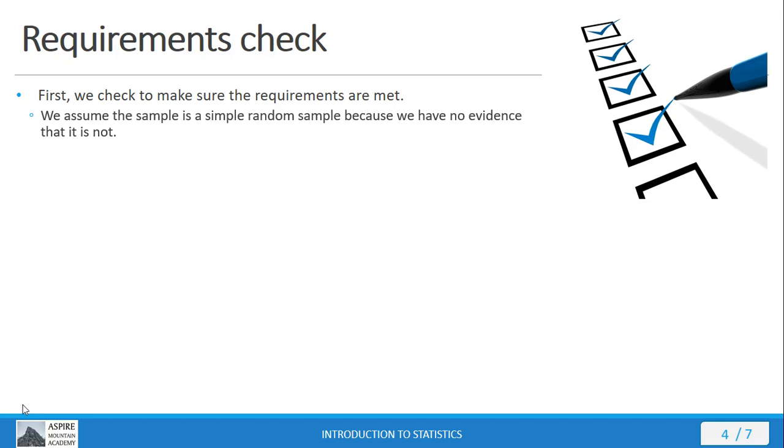First, we're assuming we have a simple random sample. We don't have any evidence that it's not a simple random sample, so in that case, we just simply assume that we have a simple random sample. Most of the time, that's actually going to be a fair assumption.